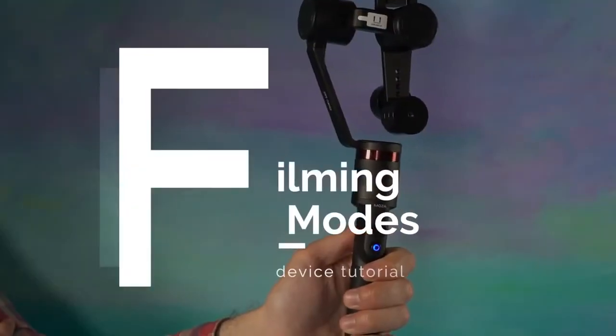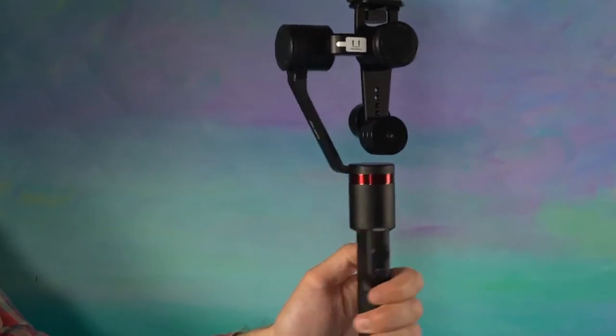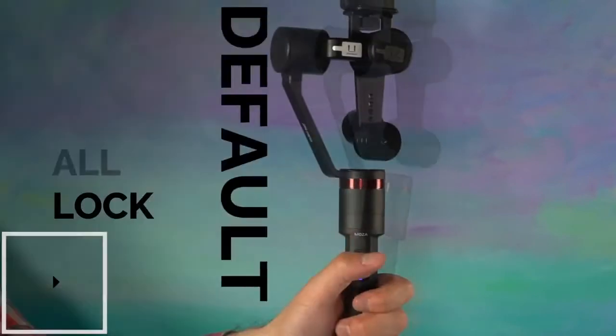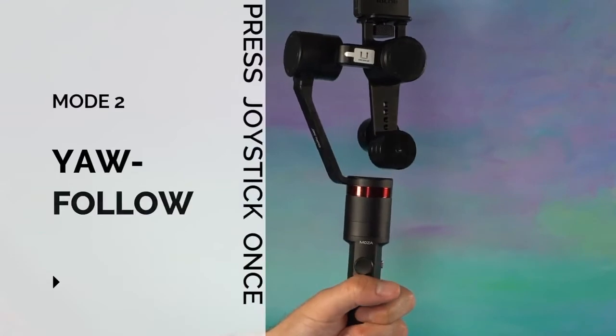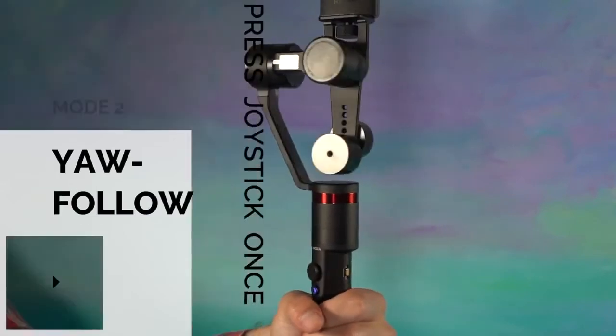Filming modes. The Guru 360 has three built-in filming modes. The default filming mode is all lock. The second mode is accessed by pressing in the joystick one time and that is yaw follow mode.